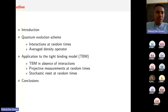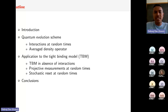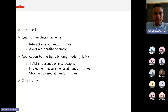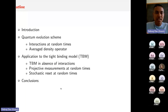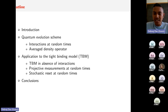So for the outline: I will start with a brief introduction of what we want to do here. Then I will talk about our exact evolution scheme for the quantum system, and then a formalism that we find very useful. Then we will apply this formalism to a tight binding model and consider two representative classes of non-unitary interactions. Then I will conclude.